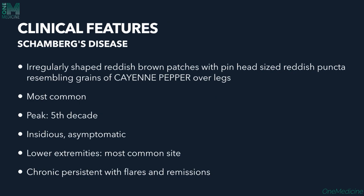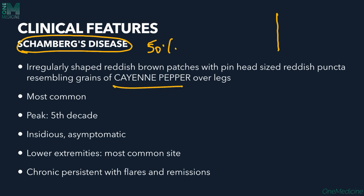Schamberg's disease is the most common PPD, affecting around 50% of patients. It presents with irregularly shaped reddish-brown patches with pinhead-sized reddish puncta resembling grains of cayenne pepper over the legs — bilaterally on the lower legs, without any symptoms.